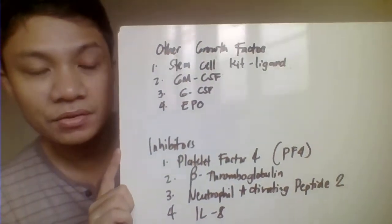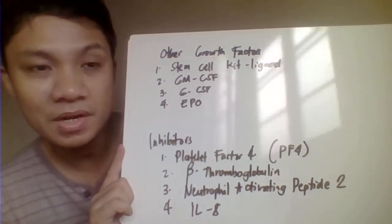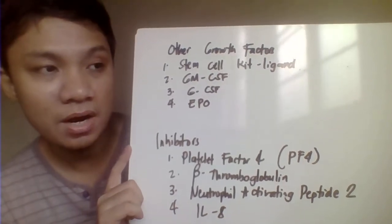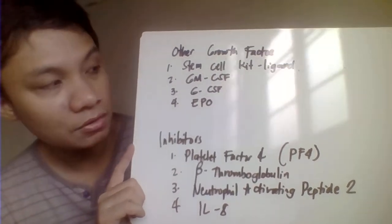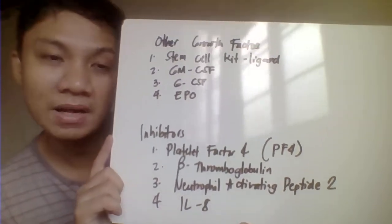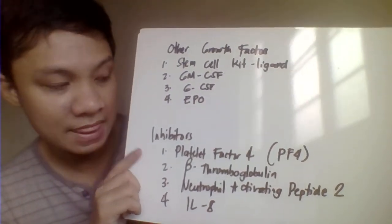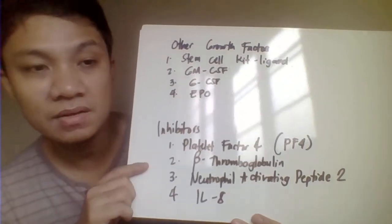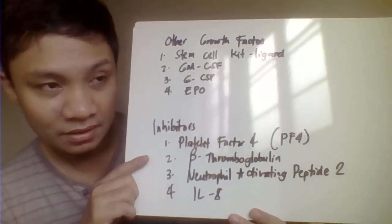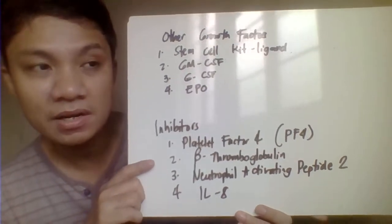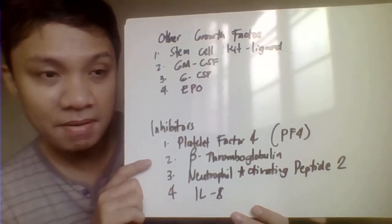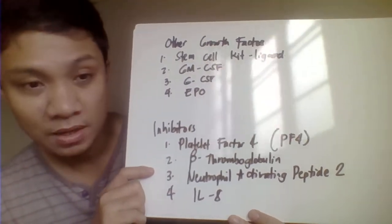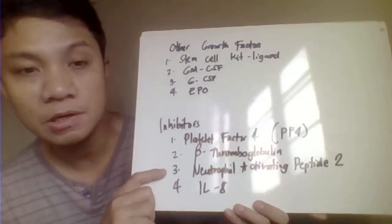We also have other factors that help in the maturation and differentiation: stem cell kit ligand factor, granulocyte-monocyte colony-stimulating factor, granulocyte colony-stimulating factor, and erythropoietin. On the other hand, the following factors try to inhibit megakaryocyte differentiation: platelet factor 4, beta-thromboglobulin, NAP2 (neutrophil activation peptide 2), and interleukin 8.